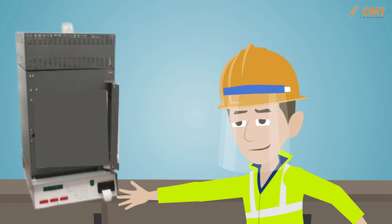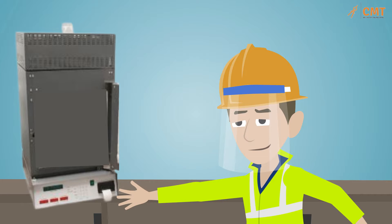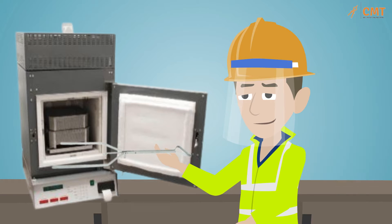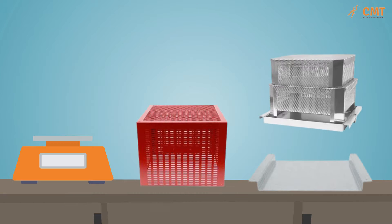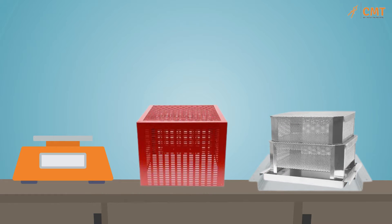Record the calibrated asphalt content from the ticket to the nearest 0.01%. Remove the basket assembly from the ignition furnace with the loading fork. Place the basket assembly on a heat-resistant surface capable of withstanding 1202°F.